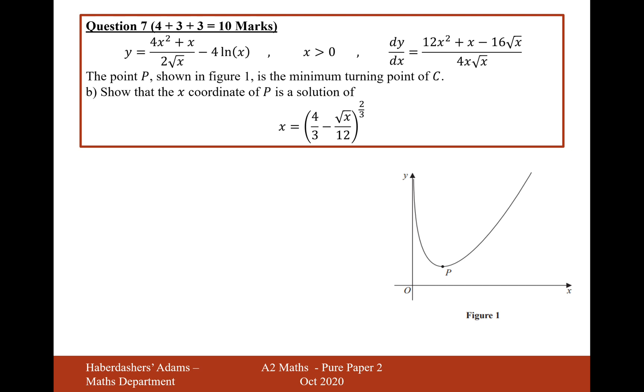Let's now move on to part b. The point P in figure 1 is a minimum turning point of C. Show that the x-coordinate of P is a solution of this equation here. So what we've got to now do is solve 12x² + x - 16√x over 4x√x equals 0. Now, to get the ball rolling, whenever you've got a fraction that equals 0, it must be the numerator that equals 0.